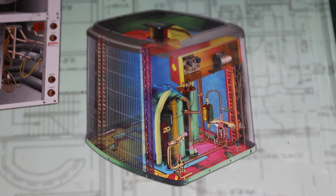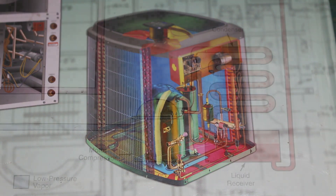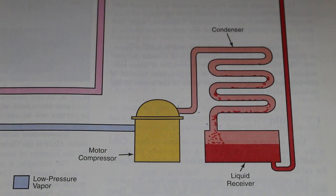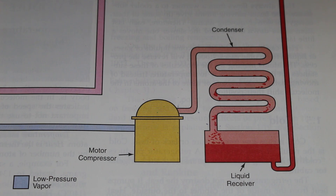Superheat can be found on the suction line and the discharge line as the temperature increases down each of those lines, either leaving the evaporator or leaving the compressor. When a manufacturer recommends a certain range of superheat, they are referring to the suction line superheat.